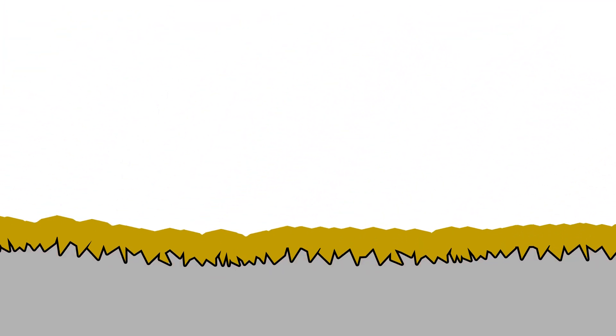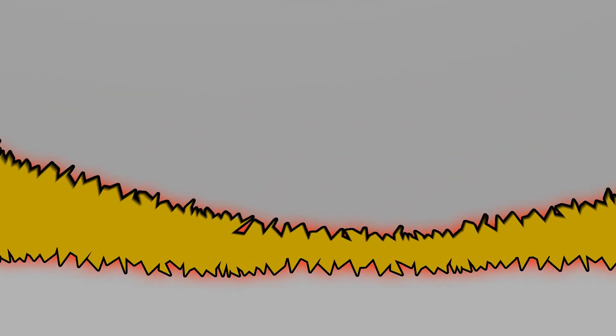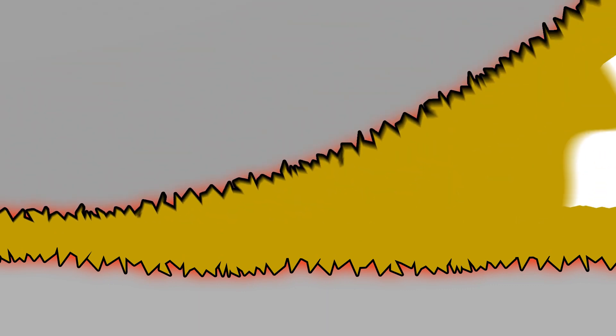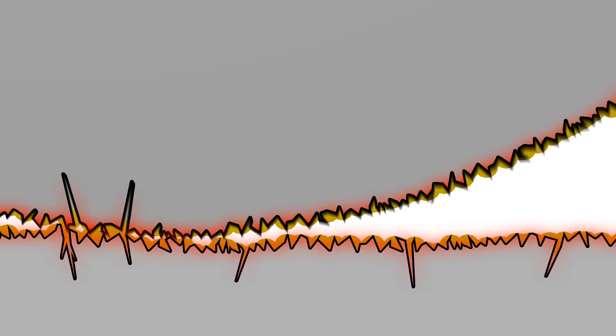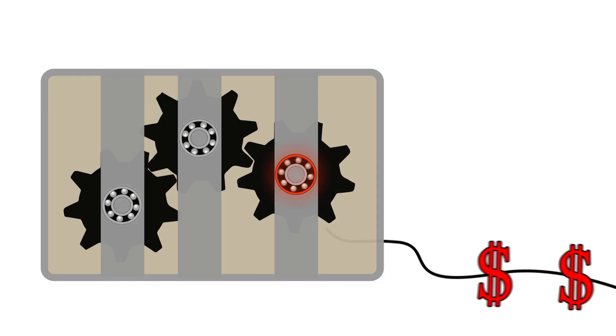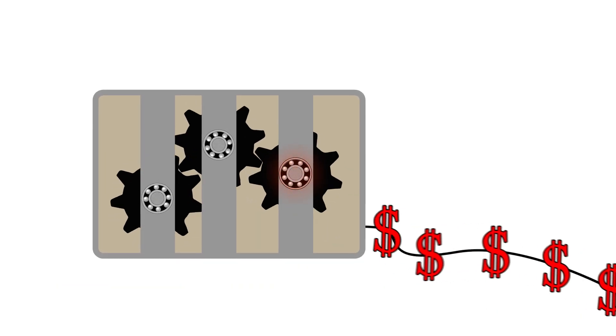Too much lubricant builds pressure inside the bearings. Too little creates excessive friction and heat. The result? Bearing fatigue, overheating, failure, and excessive energy consumption.